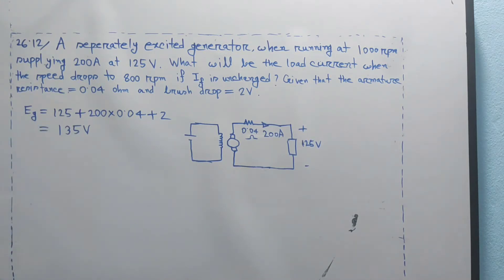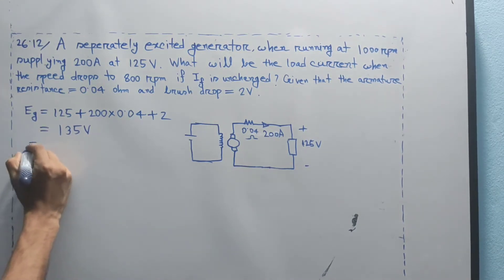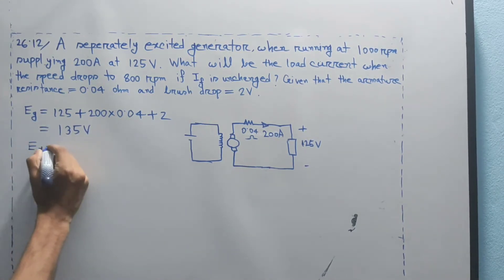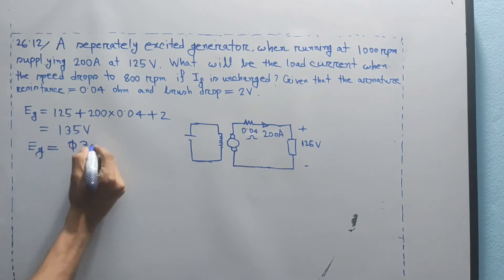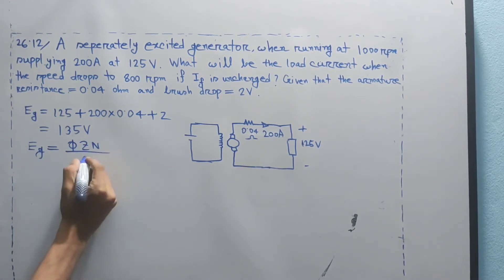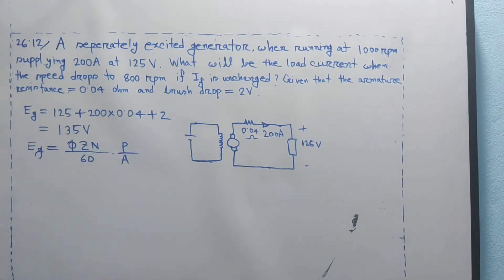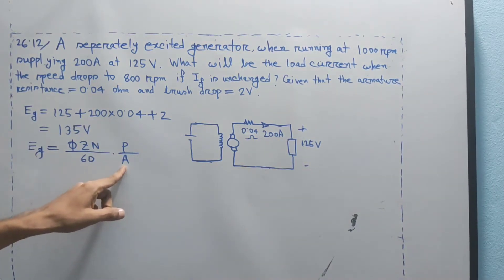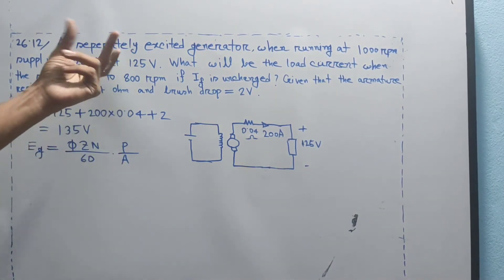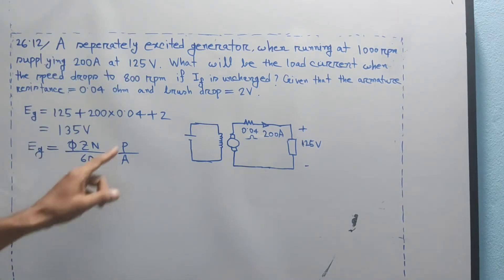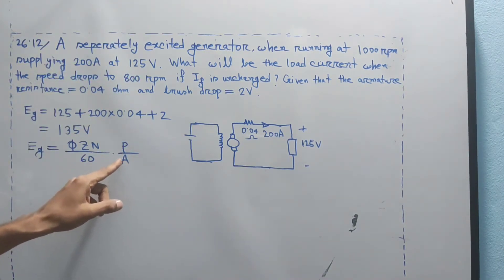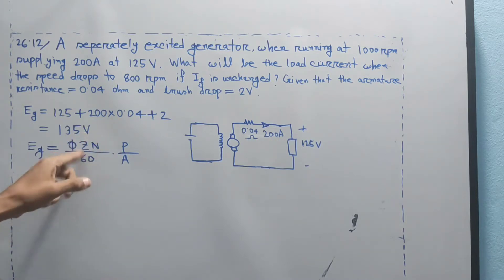The EMF equation is: Eg = φZN divided by 60, into P by A. Since the same generator is used, the pole P and the number of parallel paths A remain constant, as does the number of conductors Z.